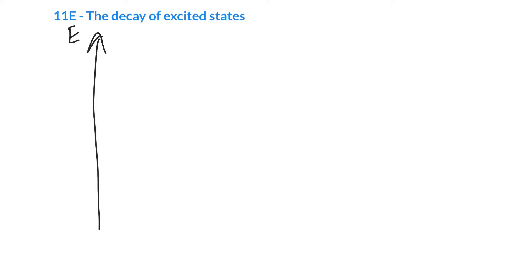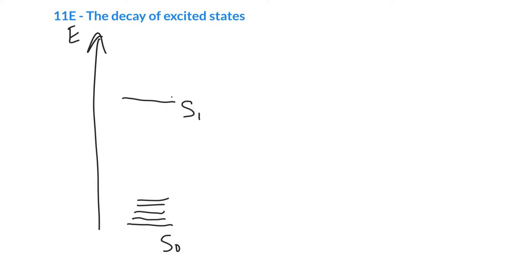We can start by drawing an energy diagram. We'll draw the ground electronic state down here and call it S0. The vibrational states are superimposed on top, and the vibrational spacing is much smaller than the electronic spacing. Here is the first excited state, S1. We label our ground state S0 and excited states with 1s, 2s, and 3s. We draw in the vibrational energy levels on top of S1 as well.